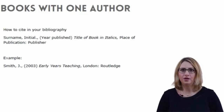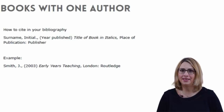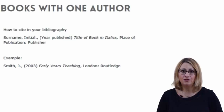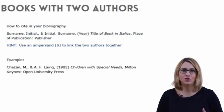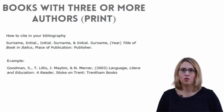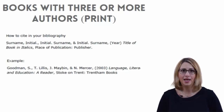For books with one author, you should first list the surname, followed by initial, year of publication in parenthesis, title of book in italics, place of publication and publisher. In books with two authors, you should use an ampersand to link the two authors together. For books with three or more authors, follow the model for two authors but list every author with a comma in between each one and an ampersand between the last two authors.